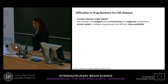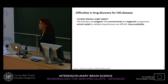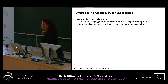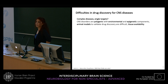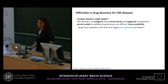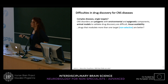Why might this be? Central nervous system diseases are very complex — one may not be able to target only single molecules, single proteins, or receptors. CNS disorders are polygenic with environmental and epigenetic components, animal models to validate drug discovery are very few or very complicated, and there is no possibility of tissue availability for biopsies and analysis. Perhaps drugs that target more than one receptor — what have been called 'dirty drugs' — are going to be better drugs.